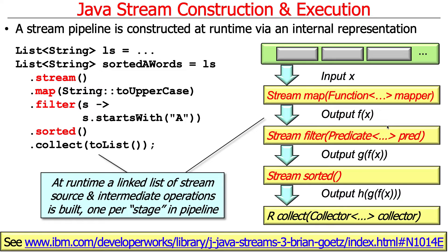Here's a very simple example. This is similar to the Hamlet example. We're going to get a list of words that are not sorted, convert that into a stream, map everything to uppercase, filter only the words that start with A, sort the results, and then collect the results to a list of strings.